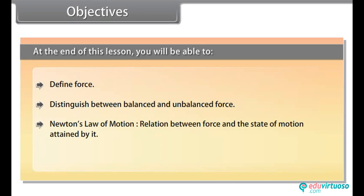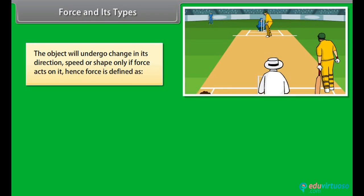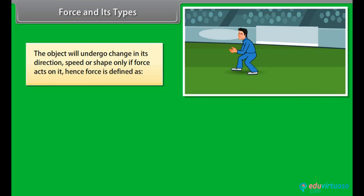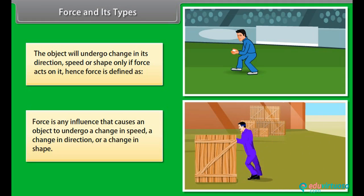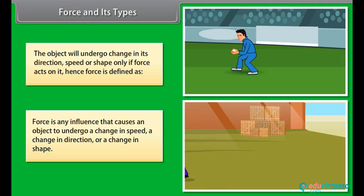Force and its types. The object will undergo change in its direction, speed, or shape only if force acts on it. Hence force is defined as any influence that causes an object to undergo a change in speed, a change in direction, or a change in shape. Force is a vector quantity.